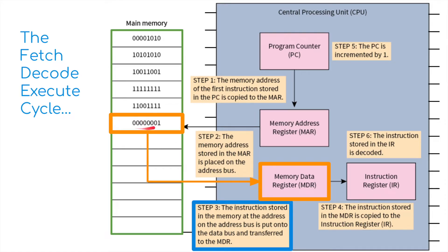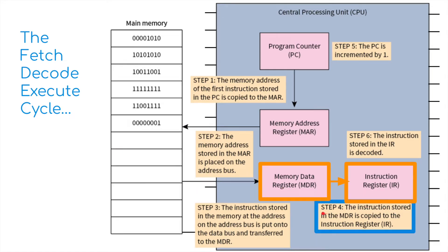The instruction stored in the main memory at the address on the address bus is put onto the data bus — this is the orange line here — and this is transferred to the memory data register. So it's looked for it in the main memory, found what needs to be done, put what needs to be done onto the data bus, and taken it to the memory data register. The instruction stored in the MDR is then copied to the instruction register.